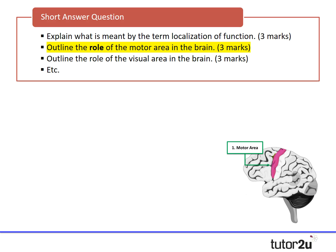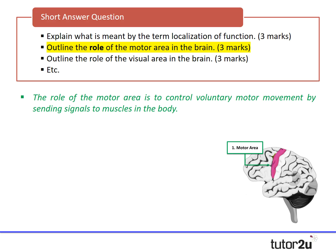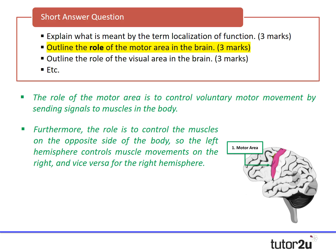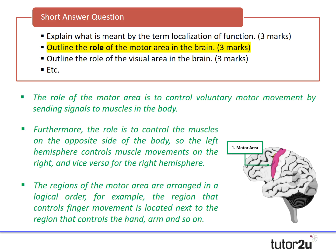Looking at another short answer: outline the role of the motor area in the brain. We need to expand our knowledge: the role of the motor area is to control voluntary motor movement by sending signals to the muscles in the body. Furthermore, it controls muscles on the opposite side of the body — the left hemisphere controls muscle movements on the right, and vice versa. The regions of the motor area are also arranged in a logical order — finger movements next to hand movements, then arm movements, and so on.